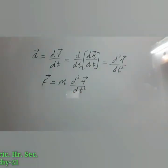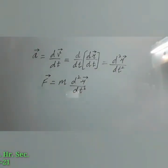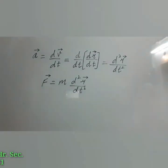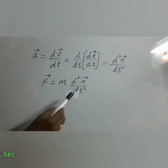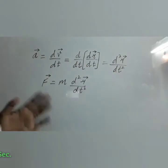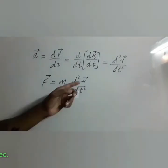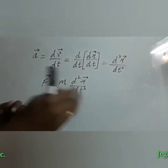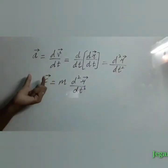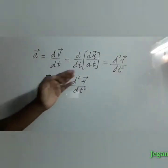From this expression we can infer that Newton's second law is basically a second-order ordinary differential equation. Whenever the second-order derivative of the position vector is not equal to zero, there must be a force acting on the object.